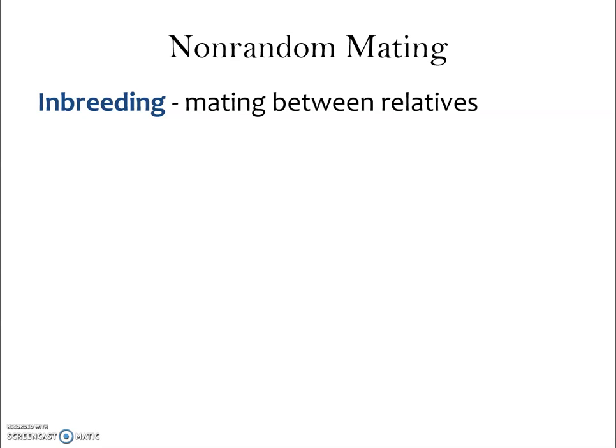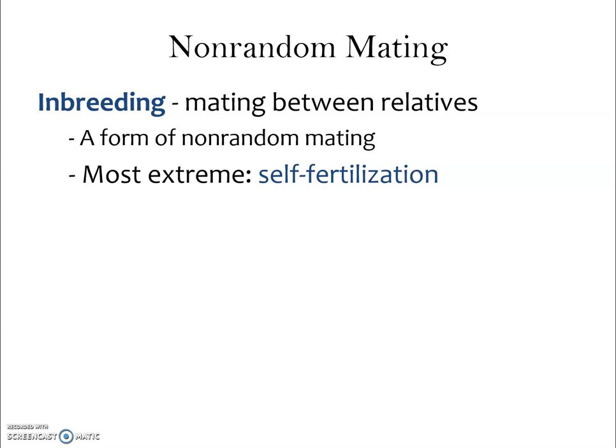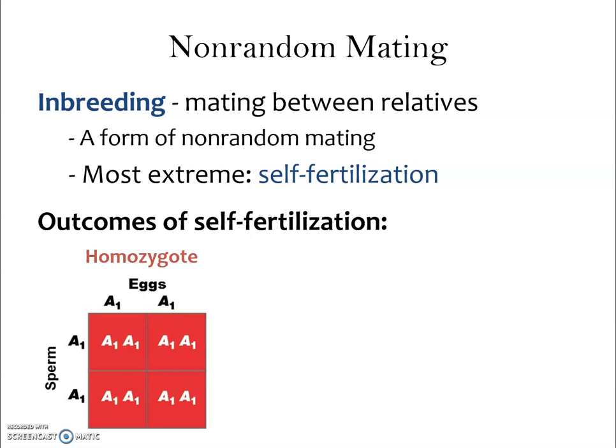Here's a key term: inbreeding. This just means mating between individuals that are closely related — siblings, cousins, it doesn't really matter. It's a general term for mating between close relatives. The most extreme form of inbreeding would be self-fertilization, which plants are a good example of — individuals that make both gametes and fertilize themselves. That's the most extreme case of non-random mating.